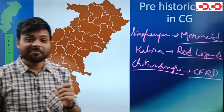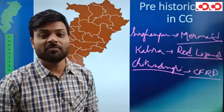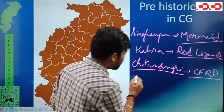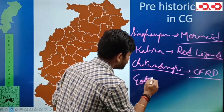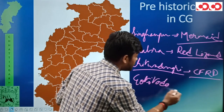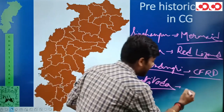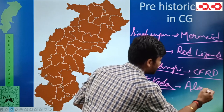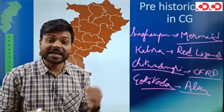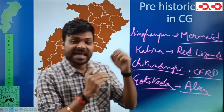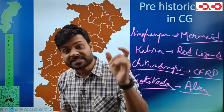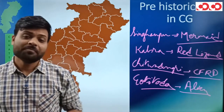Finally, Goti Tola — यहाँ से हमें देखने को मिलता है एक alien का form। देखने से ऐसा लगता है कि यह alien का एक आकृति या form है। तो ये चार locations आपको specifically याद रखने हैं: Singhanpur — mermaid, Kabra Hill — red lizard, Chitwa Dongri — Chinese figure riding donkey और dragon, Goti Tola — alien form।